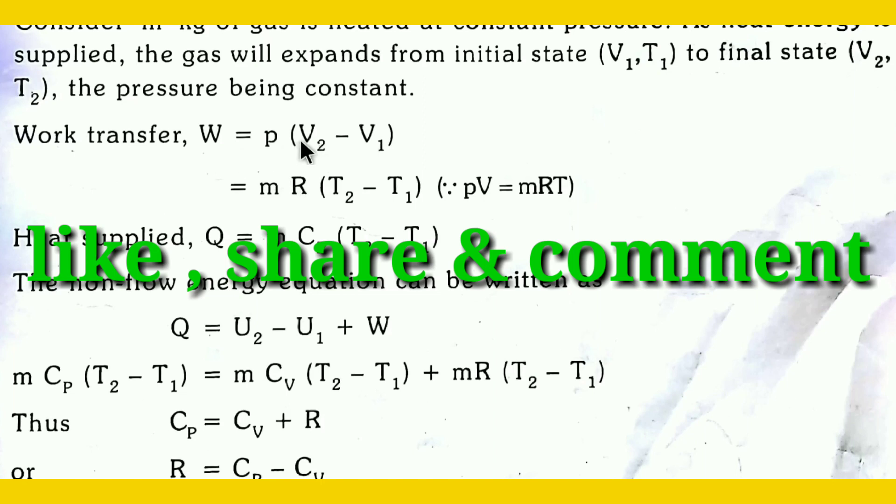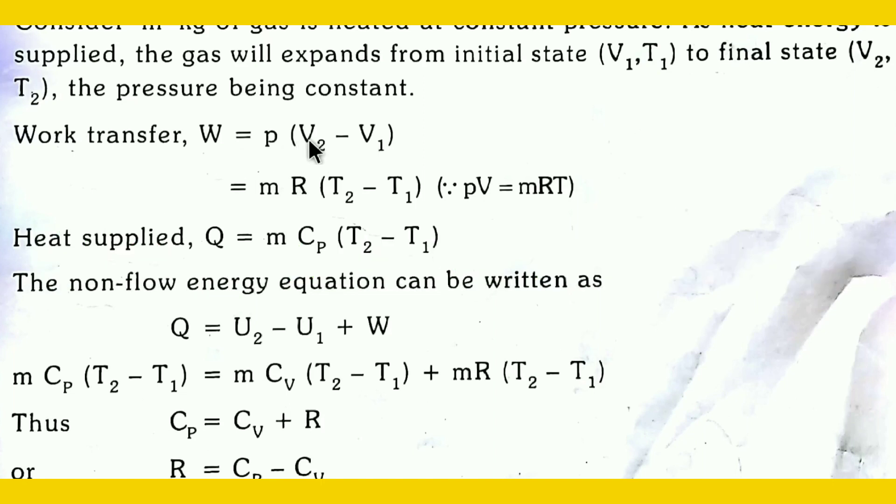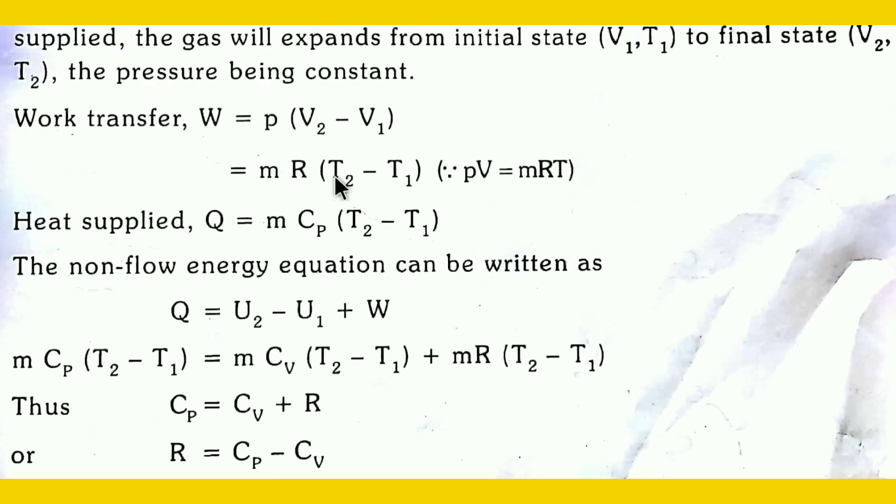We have the universal gas constant formula. We have to go from this equation: PV is equal to mRT. The total temperature represents the volume of V2 minus V1. We can substitute T2 minus T1. So W equals m R times T2 minus T1.